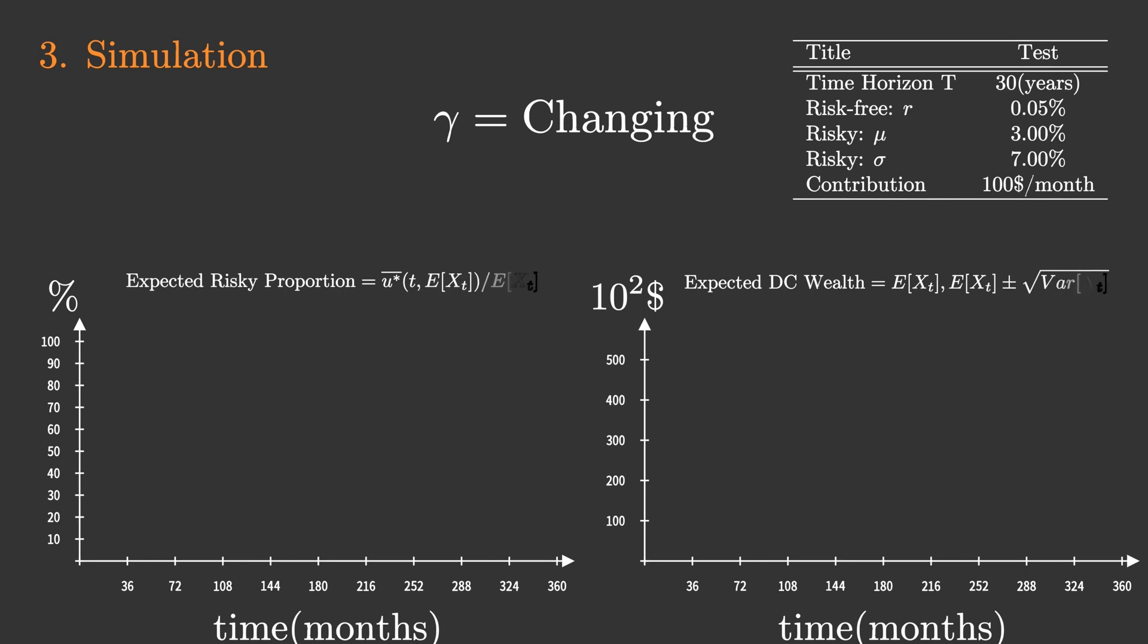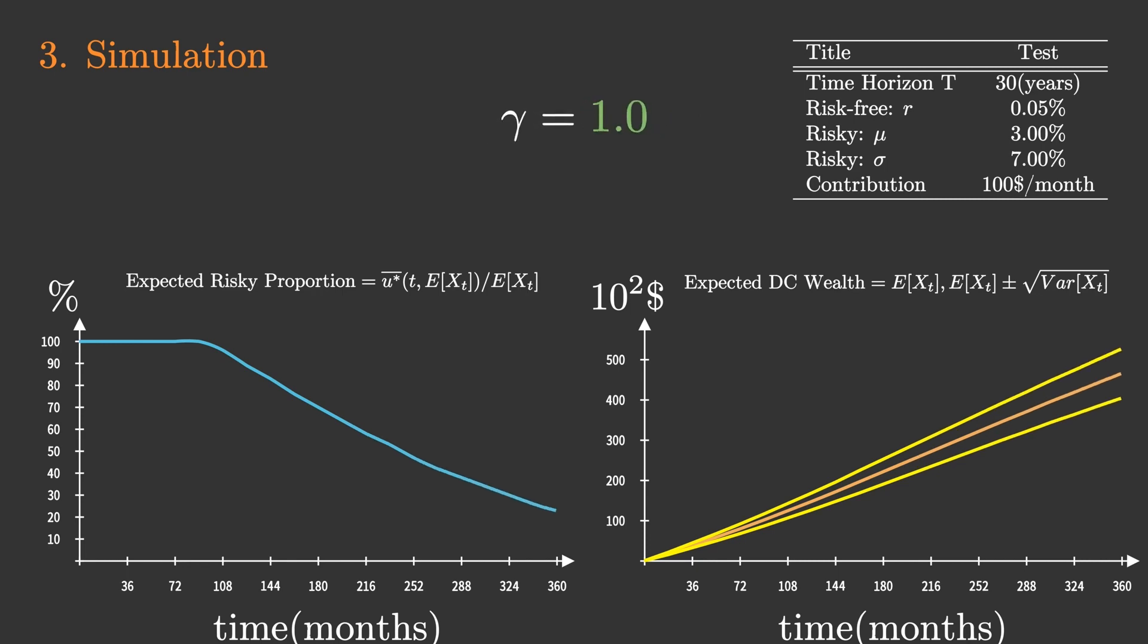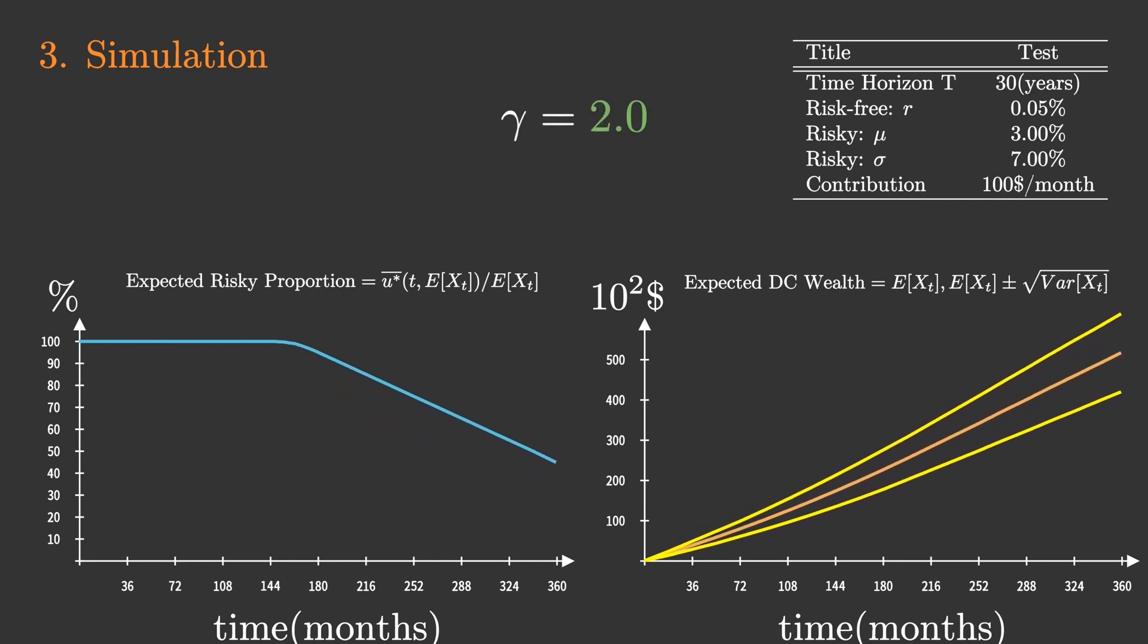First, we simulated the case in which the reserve fund performed as expected. The left side simulates the share of risky assets in DC pension reserves, and the right side shows the expected value of optimized DC pension reserves over time. When gamma equals 1, when gamma equals 2, when gamma equals 3.